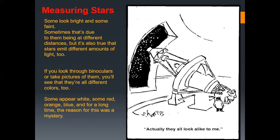When you're measuring the stars, for general people who don't know anything about stars and aren't really interested in observing the sky, we would say they look all alike. But if you're being a little bit careful, you can distinguish these stars — some look bright and some are faint. Sometimes that's due to them being at different distances, but it's also true that stars emit different amounts of light. If you look through a binocular or take a picture of them, you will see that they are all different colors as well.